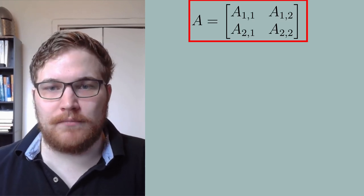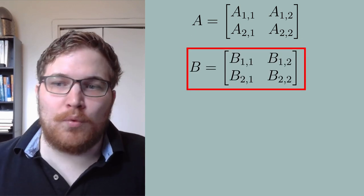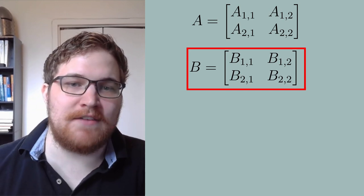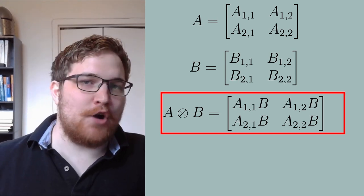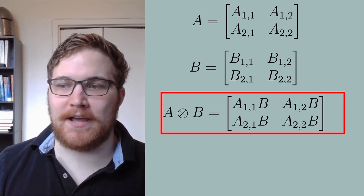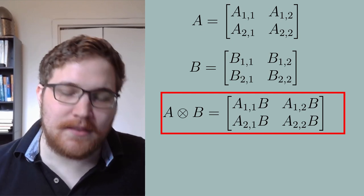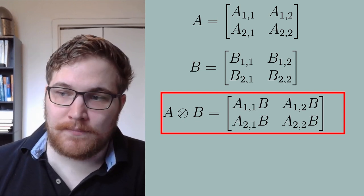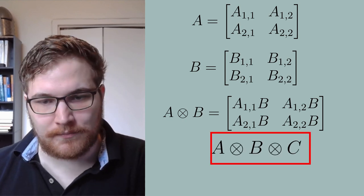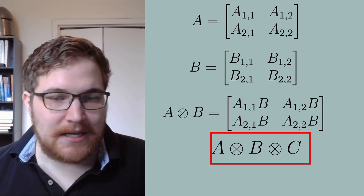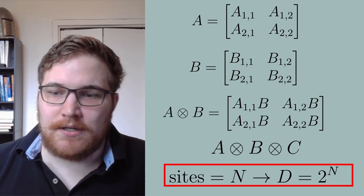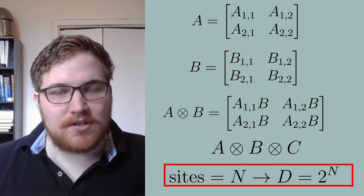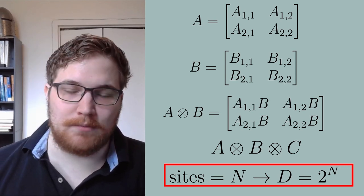Suppose that we had some arbitrary matrix A belonging to site 1, and some arbitrary matrix B belonging to site 2. Then the tensor product between these two is given by the following formula. Our new matrix would be 4 by 4, so the dimensions have doubled. This doubling happens every single time we add a new lattice site to our description. We could, for example, imagine some matrix C for site 3 and write the product of all three matrices, giving an 8 by 8 result. In general, the number of sites we include will make the dimensions go like 2 to the power of the number of sites. This is one of the fundamental reasons doing computations and simulations in this regime can be so hard.